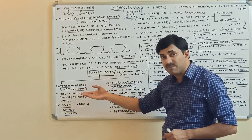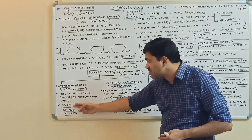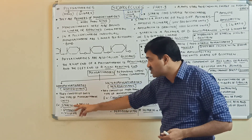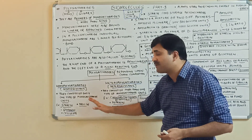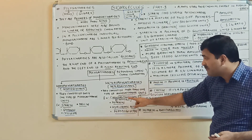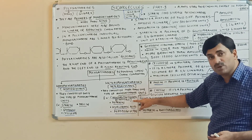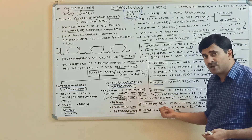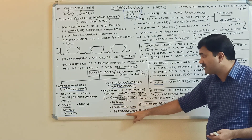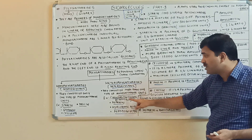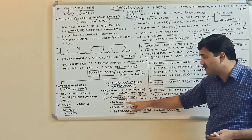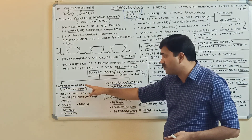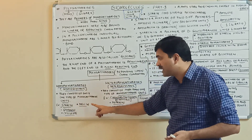Common examples of homopolysaccharides are starch, glycogen, cellulose, and inulin. Examples of heteropolysaccharides are chondroitin sulfate — found in cartilage — heparin, hyaluronic acid, and peptidoglycan.